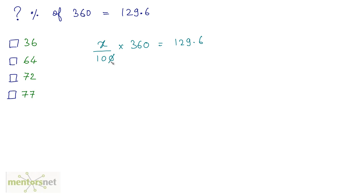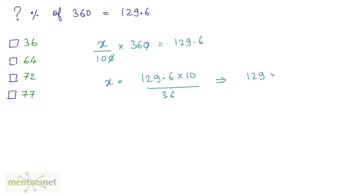If I cancel out these zeros, I have x is equal to 129.6 times 10 divided by 36, and that is equal to 129.6 by 36. If I divide 129.6 by 36, I get 36. So the answer is option A.